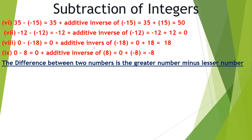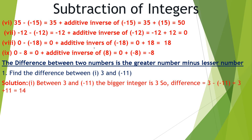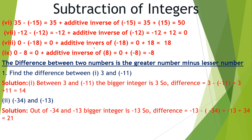The difference between two numbers is the greater number minus the lesser number. Let us find the difference between 3 and minus 11. Out of 3 and minus 11, the bigger integer is 3. So the difference equals 3 minus minus 11, which equals 3 plus 11, equals 14. For minus 34 and minus 13, minus 13 is the bigger integer. So the difference equals minus 13 minus minus 34, which equals minus 13 plus 34, equals 21.